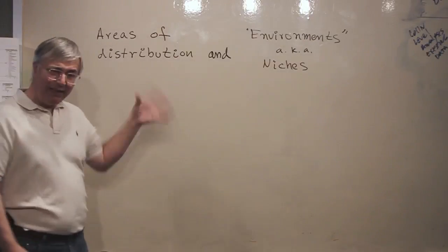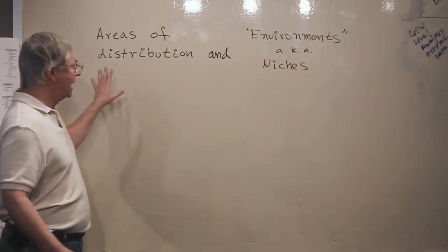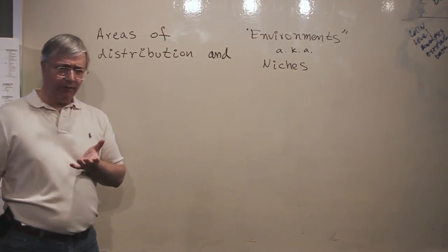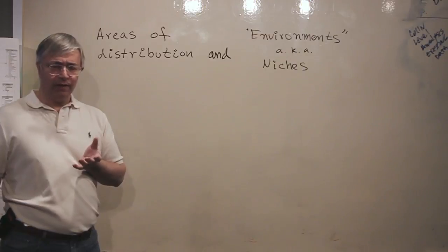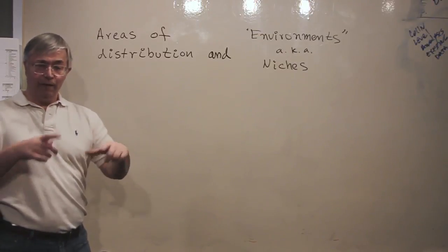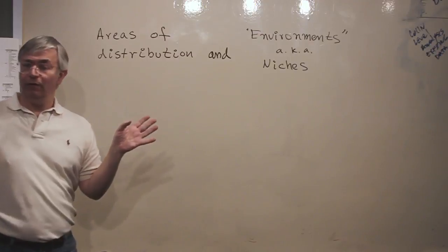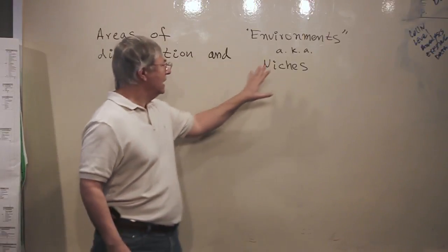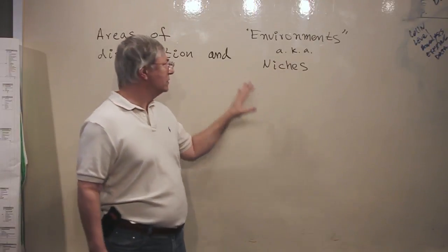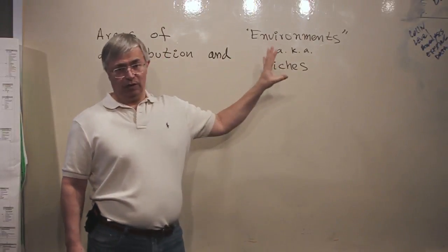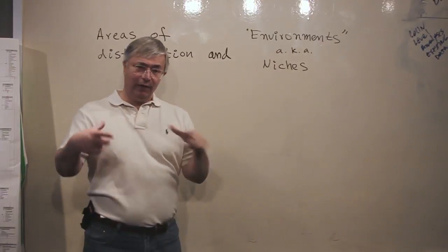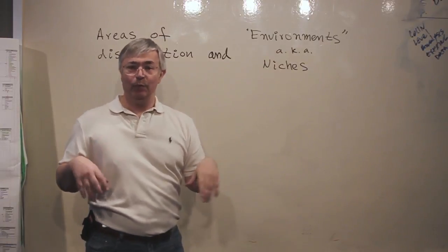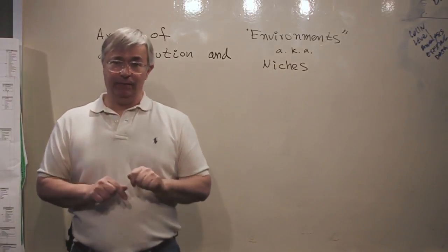So we want to model the areas of distribution of species and not just model them without any reference to their biological properties. It is surprising, but you can do it. You can do the models without any reference to the biology of the species. We want to involve biology of the species and the way of modeling that we're going to use is called niche modeling because it's based on the relations between the environments where the species live or can potentially live and what we observe in the field.